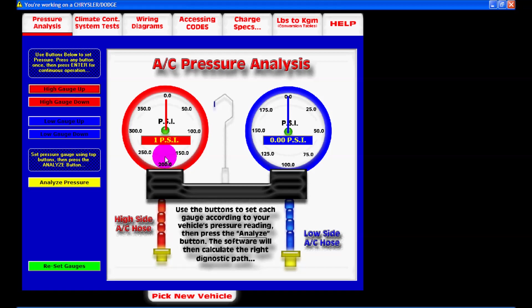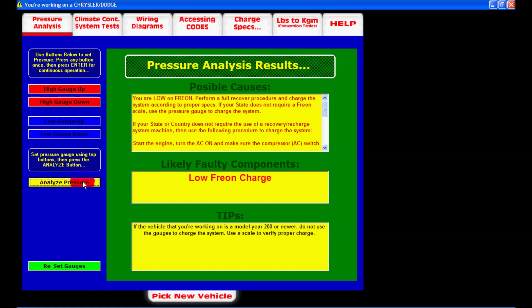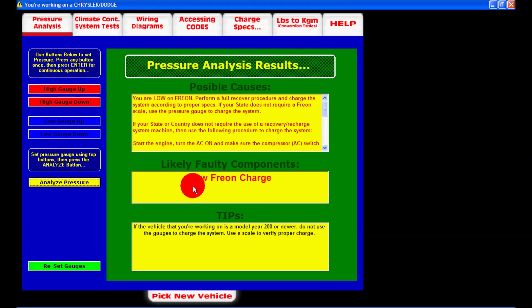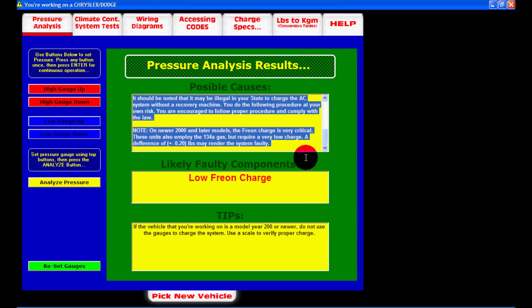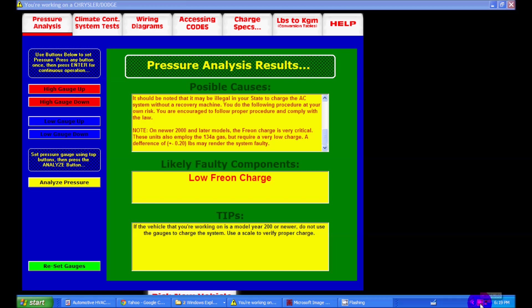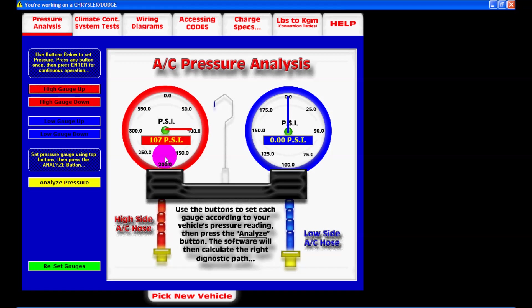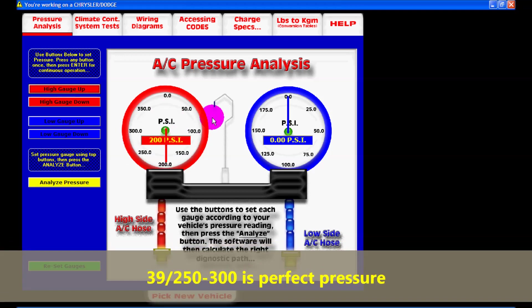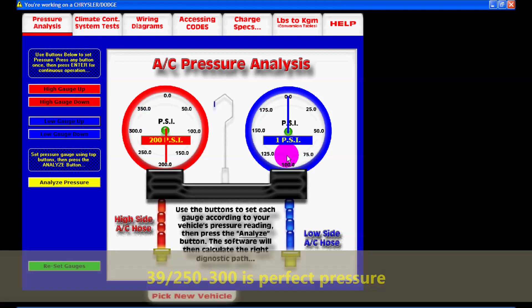What happened here is we clicked analyze pressure, and we came up with low freon in there. Sure enough, we went ahead and did a freon recover, we recovered. There were no leaks in the system because we had already installed some dye in there, and there was no leaks. That's just what it was. It goes to show you that a pressure of 200 over 25 is the perfect pressure, and the software was able to give us a pressure analysis right away, which was right on the money.